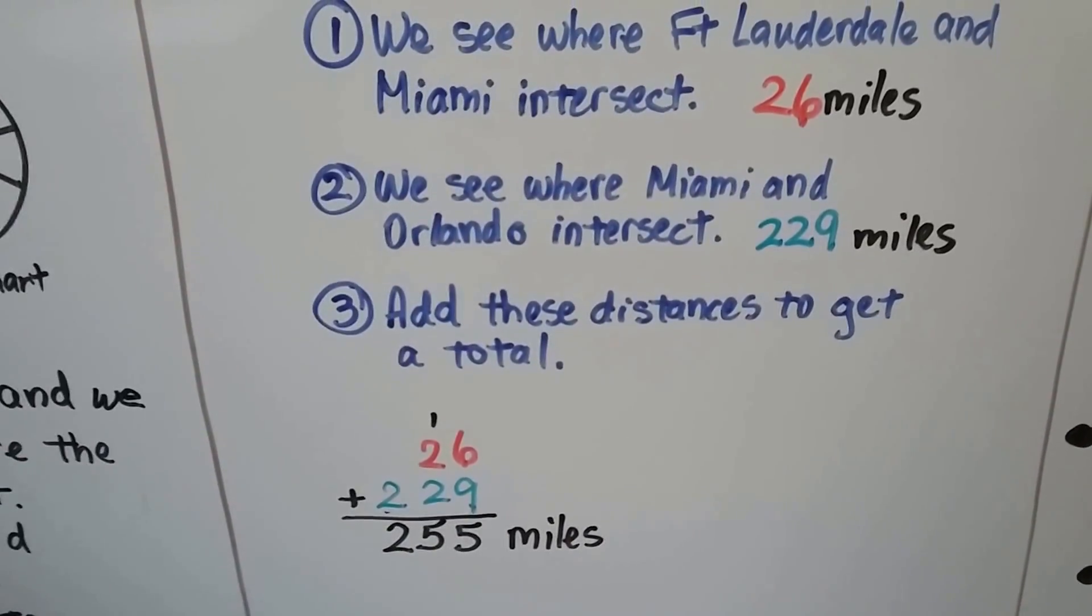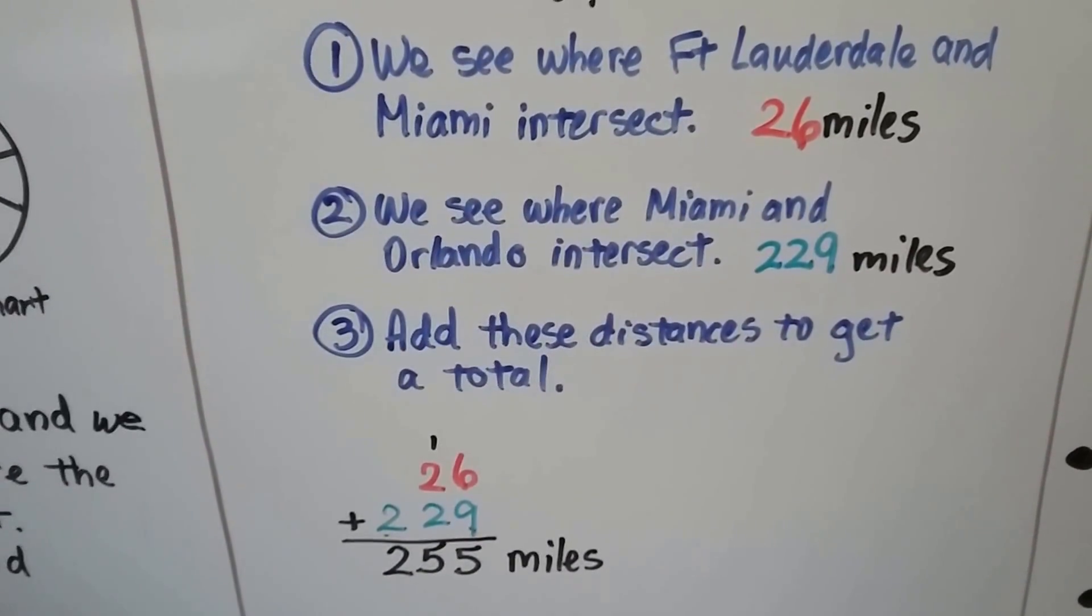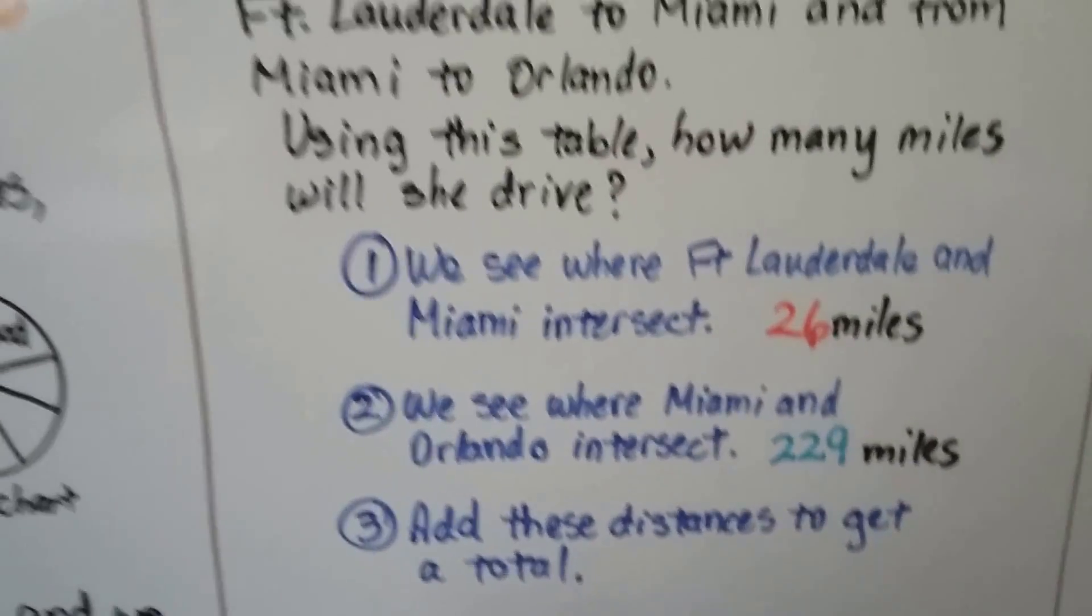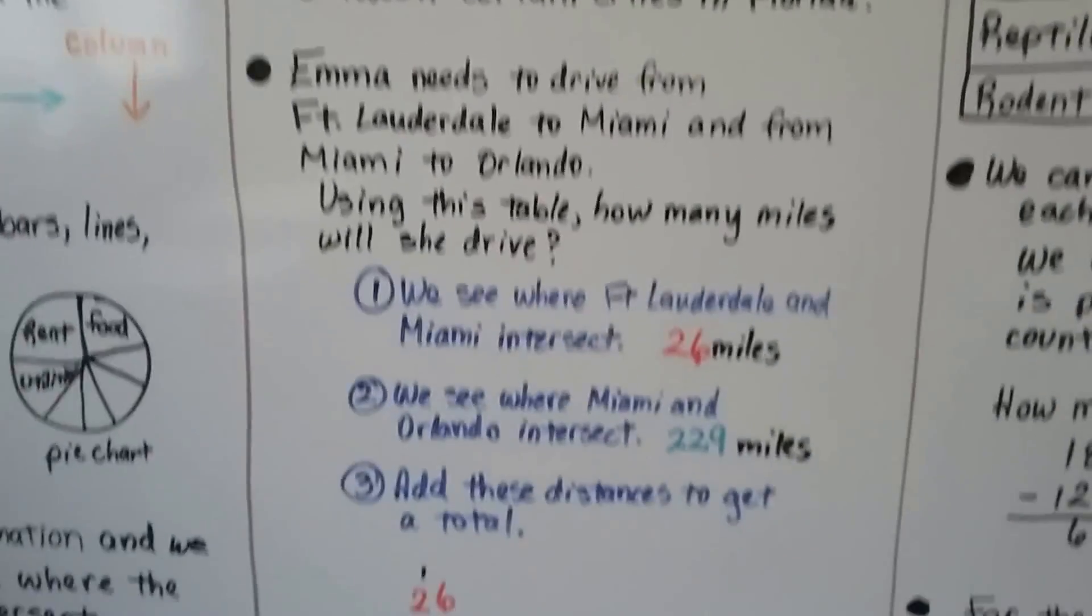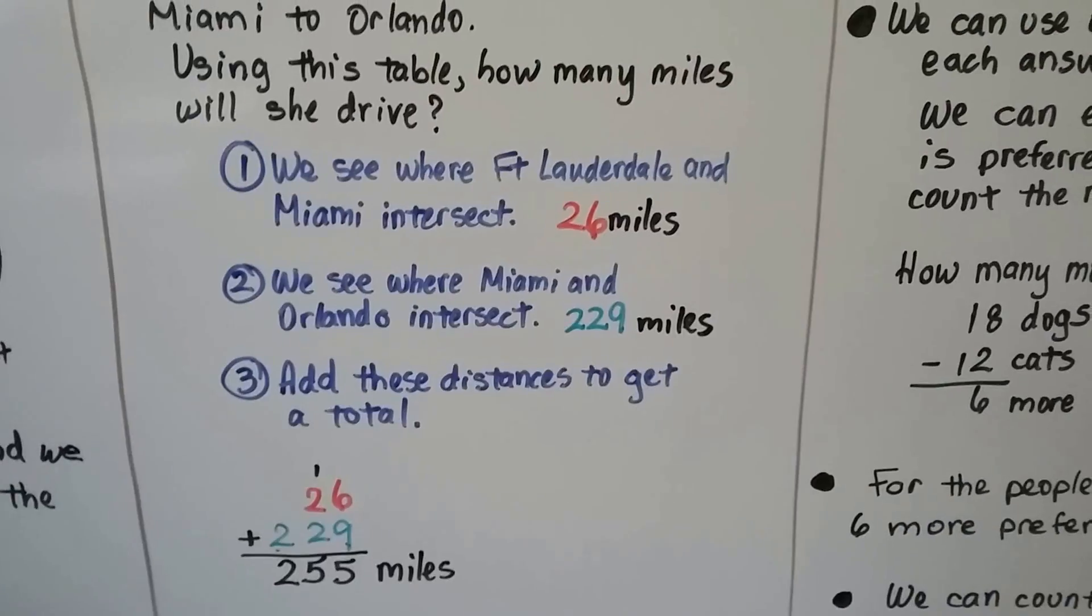Well, all we have to do is add these distances to get a total. It's going to be 255 miles. That's how far she's going to have to drive. So we use the information from the table and it helped us solve the problem.